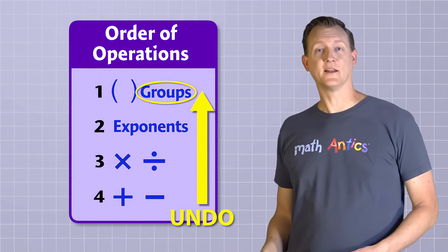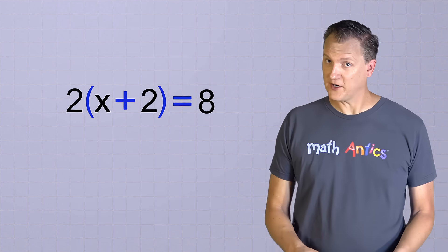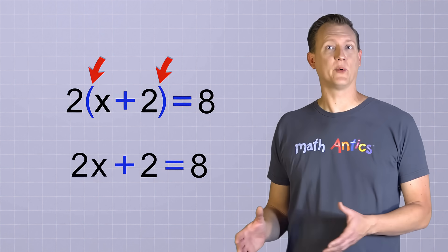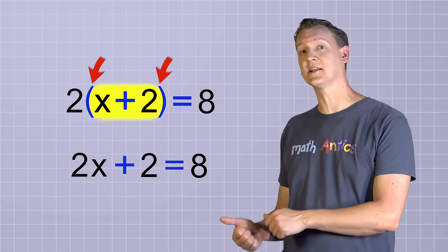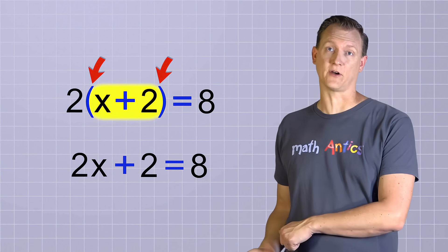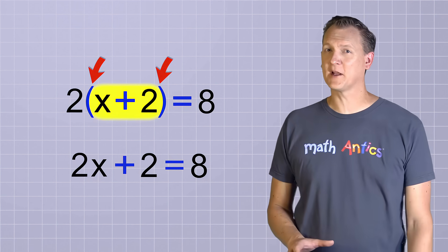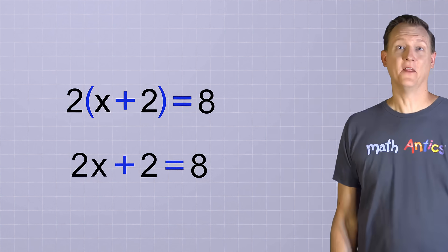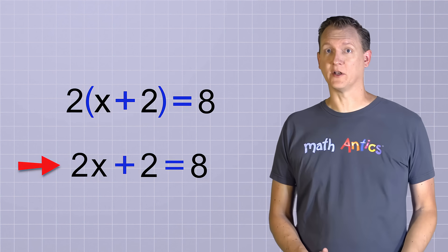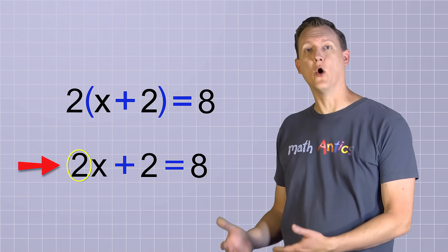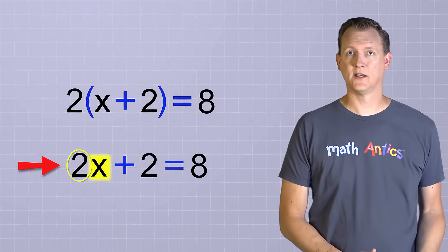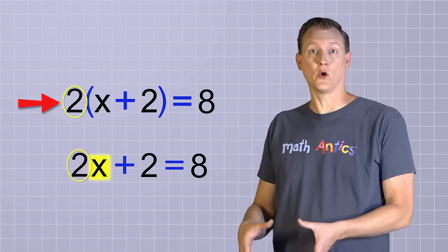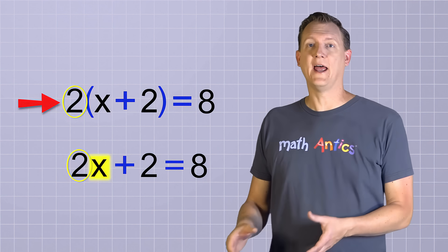Let's solve this equation, which looks very similar to the first one we solved. The only difference is that parentheses have been used to group x plus 2 together. Even though that might not seem like much of a change, it makes a big difference for our answer. In the original equation, the first 2 is only multiplied by x — but in the new equation, it's being multiplied by the entire quantity x plus 2.